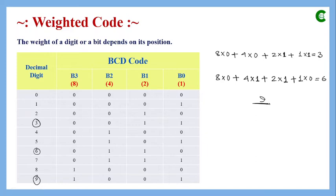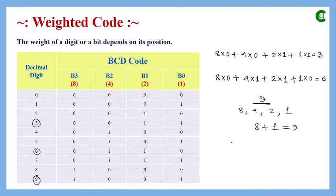To represent decimal 9 using 8-4-2-1, the only valid combination is 8 + 1 = 9, giving the bit pattern 1001: MSB is 1 (8×1), next two bits are 0 (4×0 + 2×0), and LSB is 1 (1×1). This is the only combination that works for 9 in this weighted code.